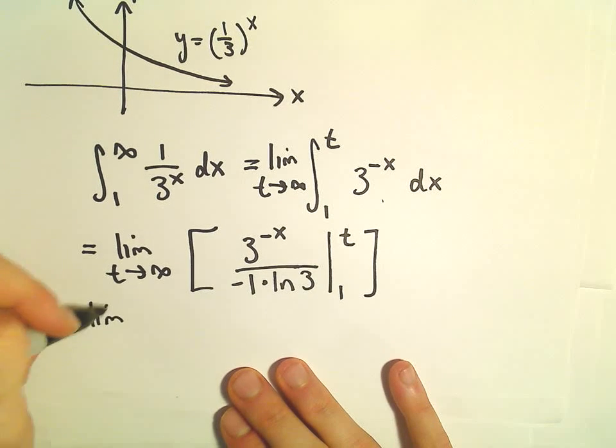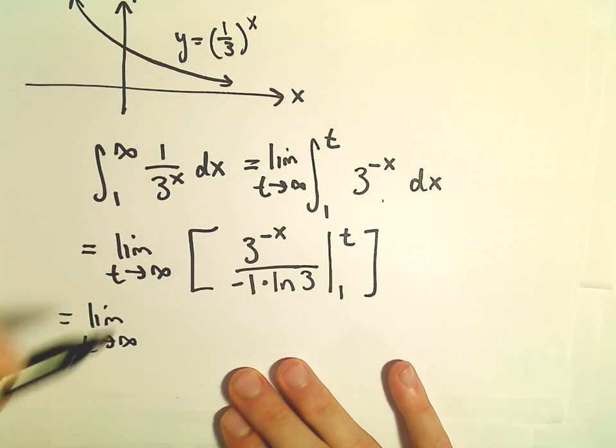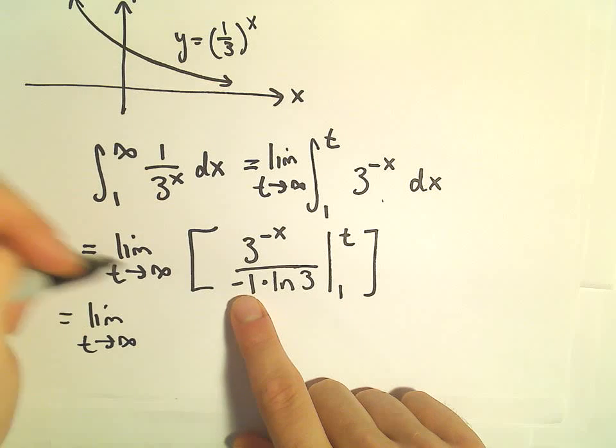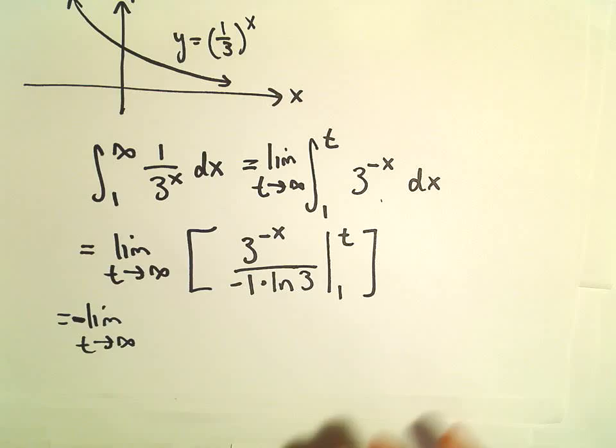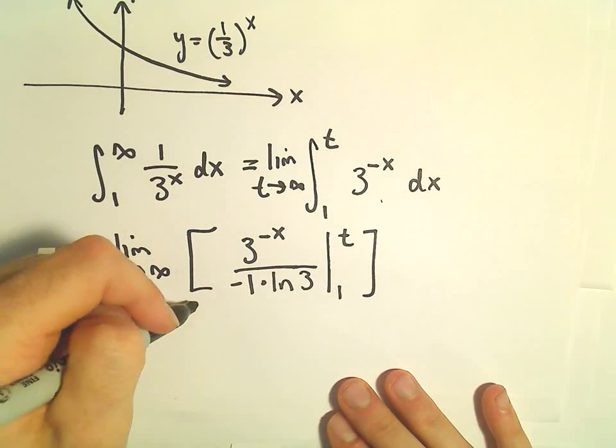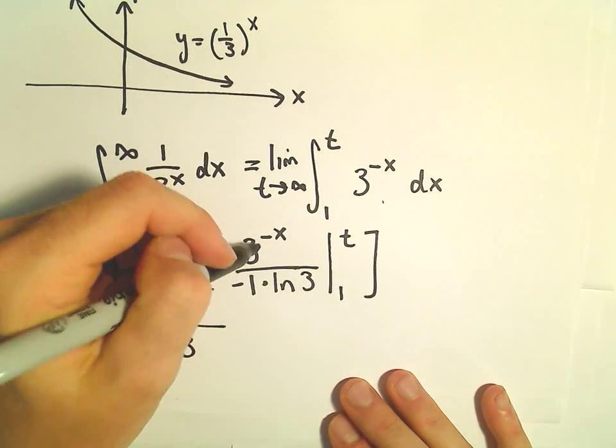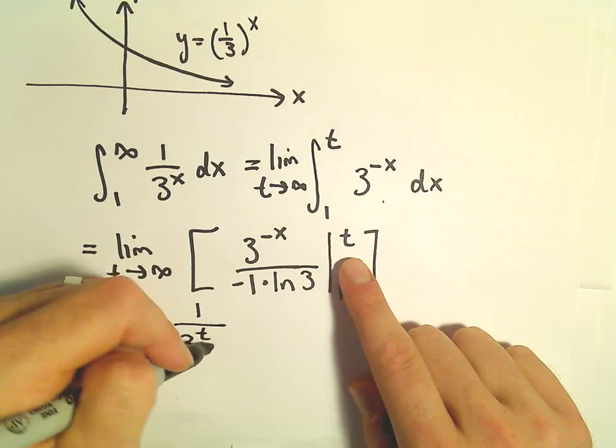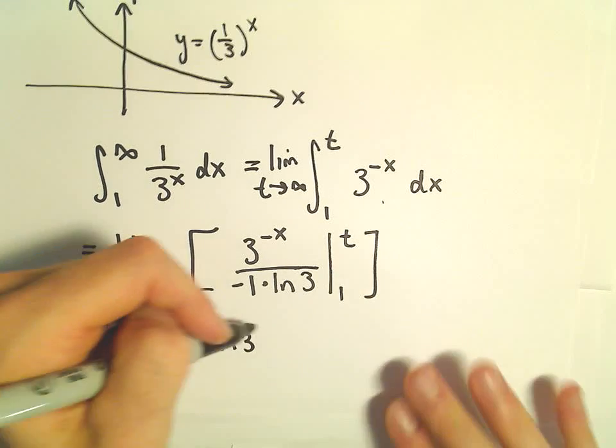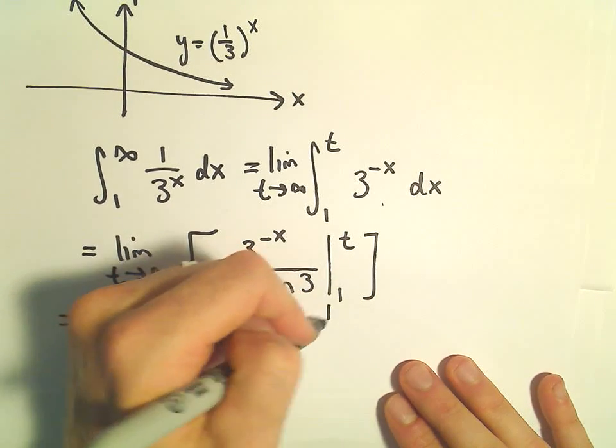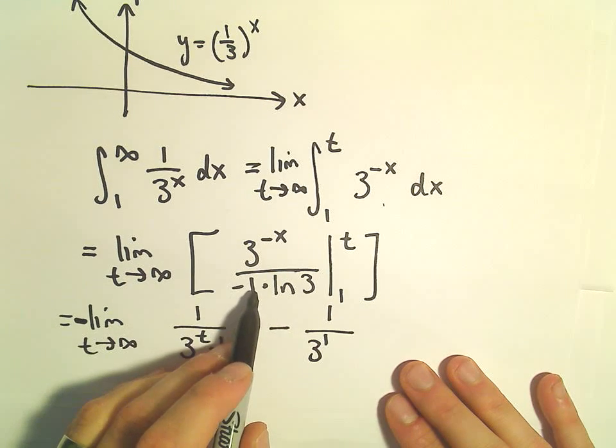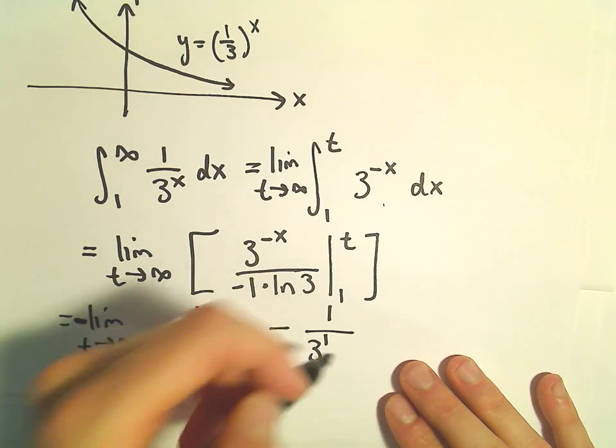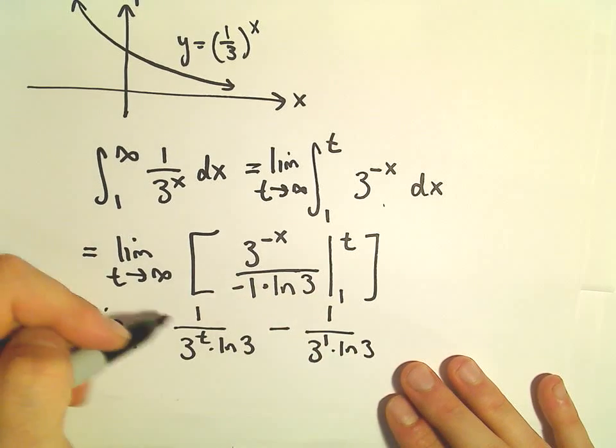So here we've got the limit as t goes to infinity. I'm just going to pull the negative out front. So there's my minus sign. We would have 1 over 3 to the x, but that would turn into a t, times the natural logarithm of 3, minus we would have 1 over 3 to the 1st, when we put it back in the denominator, the 3 to the negative x, times ln of 3.